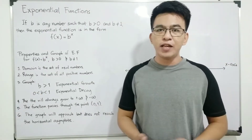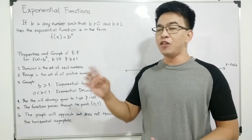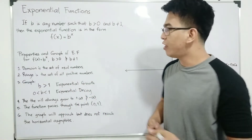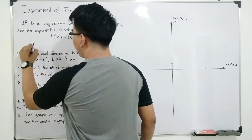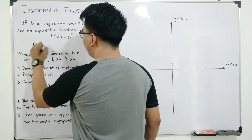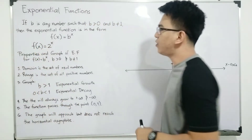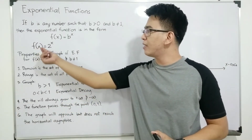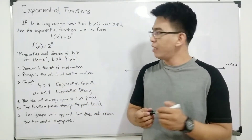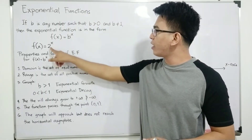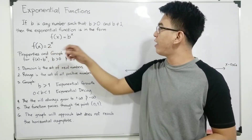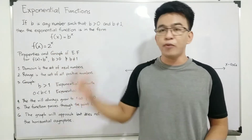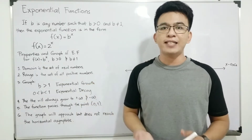I will give you examples so you can recognize the function once you see it. The first example is f of x is equal to 2 raised to x. As you can see, this is in functional notation, where the base b is 2, which is greater than 0 and not equal to 1. This is exponential because the variable x is used as an exponent.